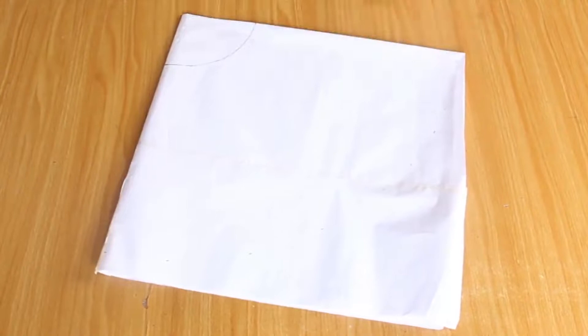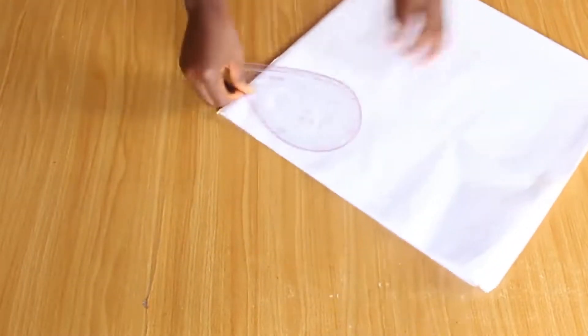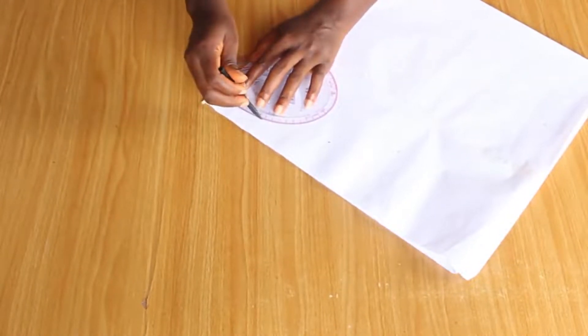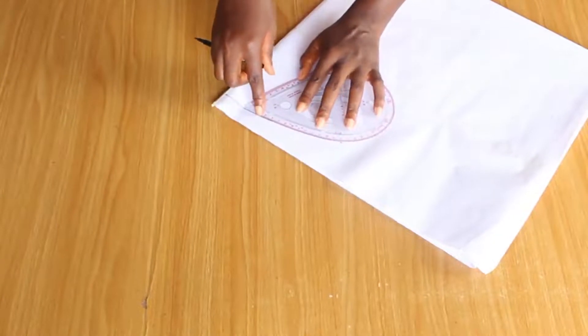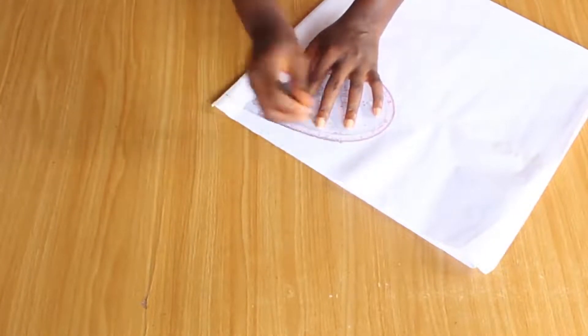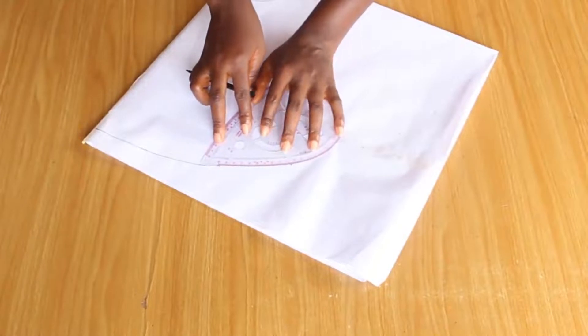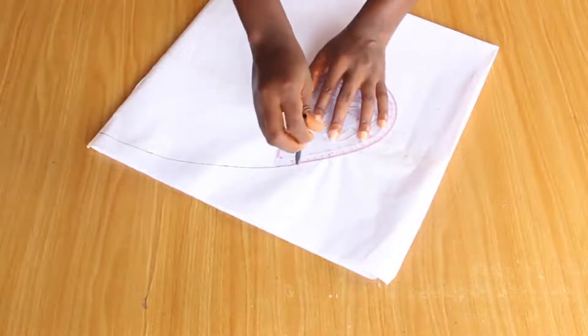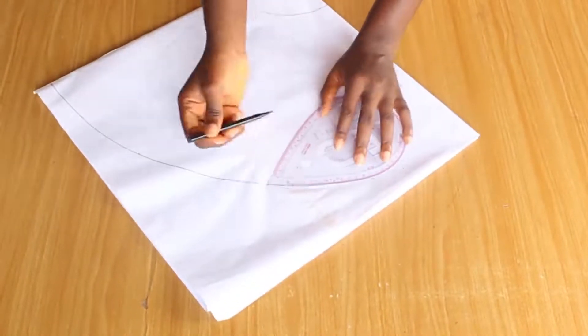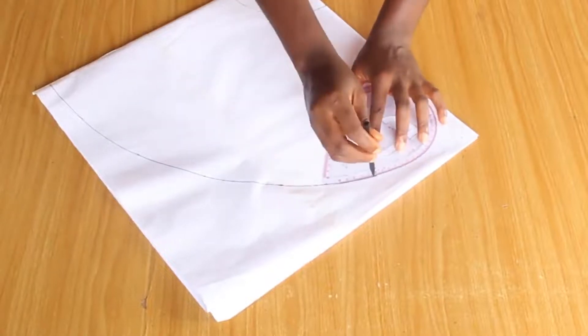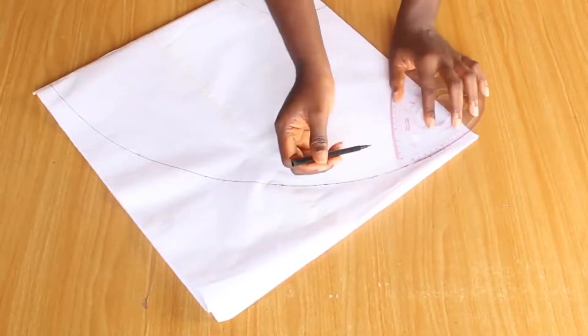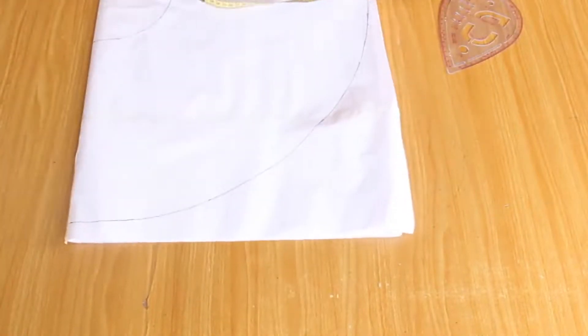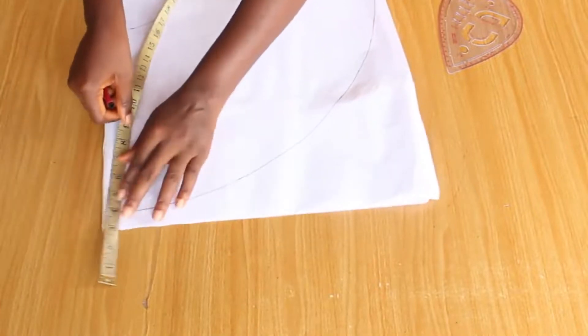Once this is done, I'm going to go ahead and connect my points with my curved ruler. I'm going to add my half inch allowance for my seam.